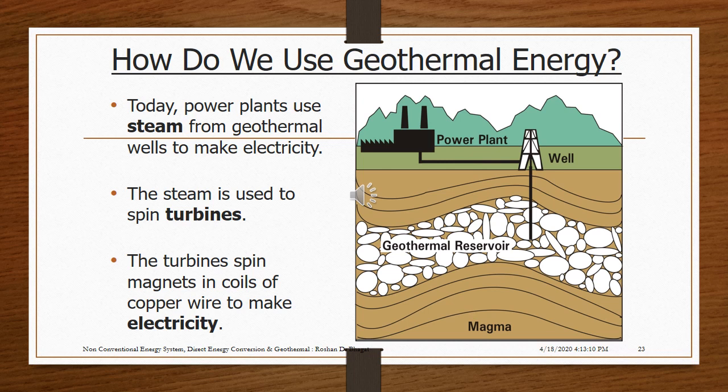People have used geothermal energy for heating and bathing for thousands of years. Hot springs are pools of water warmed by underground springs, so they are always hot. Today, power plants use steam from geothermal wells to make electricity. The steam spins turbines, and the turbines spin magnets in coils of copper wire to make electricity.